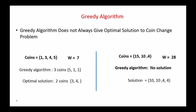For example, with coins 1, 3, 4, 5 and amount 7, using a greedy strategy we first pick coin 5, then 1 and 1, requiring three coins. However, the optimal solution uses only two coins: 3 and 4.